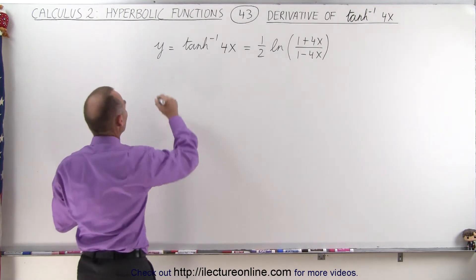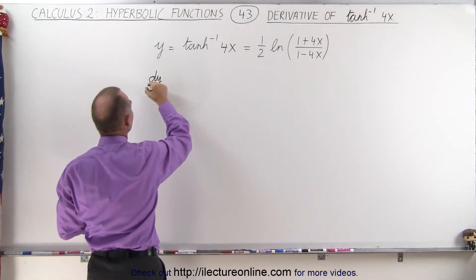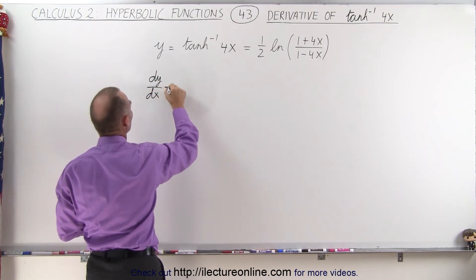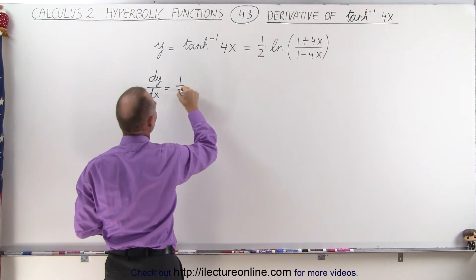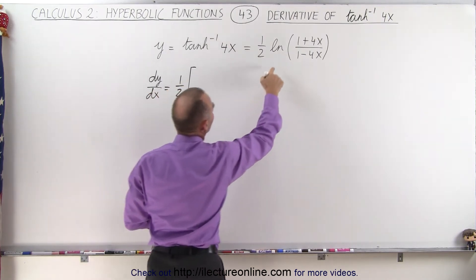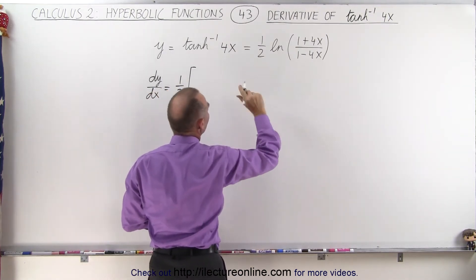So now when we take the derivative, we can say that dy dx is equal to the derivative of what we have over there. So this is going to be equal to 1 half times the derivative of the natural log is 1 over that,